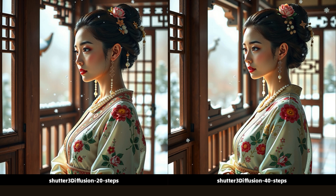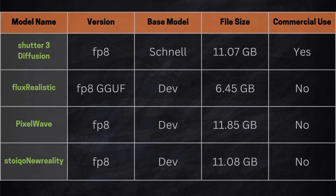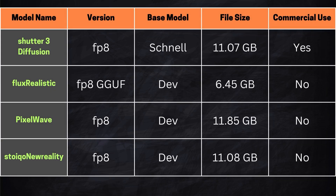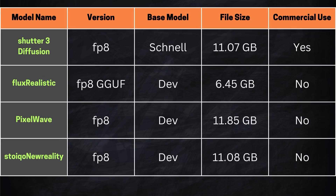Let's break down the checkpoints we're comparing. I've organized them into a table to make things clear. The two checkpoints in the upper half of the table stand out for their unique features. Shutter 3 Diffusion is based on the Chanel version, and its biggest perk is that it's commercially available. Meanwhile, Flux Realistic stands out as a quantized model, making it highly efficient for systems with lower video memory while requiring the least storage space. Pixel Wave and Stoico New Reality appear quite similar based on the table details, but we'll explore their image generation performance in more detail shortly.